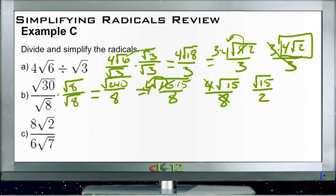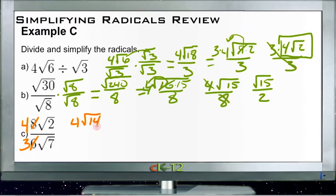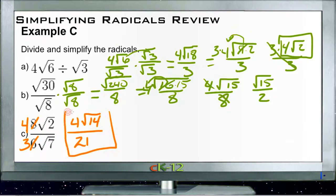And then finally, we have 8 roots of 2 over 6 roots of 7. First we divide everything by 2, giving us 4 roots of 2 over 3 roots of 7. We multiply top and bottom by root 7, so that gives us 4 roots of 14 on top. On the bottom, root 7 times root 7 gives us just 3 times 7, or 21. And that's it — 4 roots of 14 over 21 — because 4 doesn't go into 21, and the square root of 14 doesn't break up into anything with a perfect square.